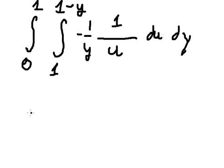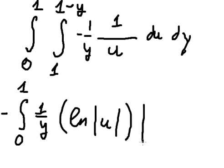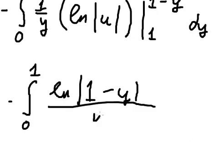The integral of 1 over u du equals ln of the absolute value of u. We then put the bounds from 1 to 1 minus y, and integrate with respect to dy.